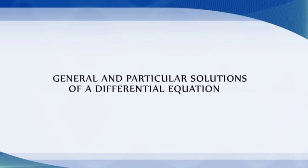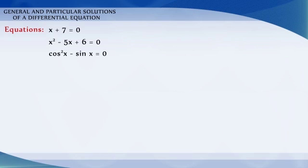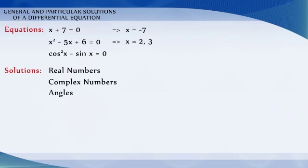General and particular solutions of a differential equation. In our earlier classes, we solved equations of the type x plus 7 is equal to 0, x squared minus 5x plus 6 is equal to 0, cos squared x minus sin x is equal to 0, etc. Solutions of these equations are real numbers, complex numbers, or angles which satisfy the given equation.